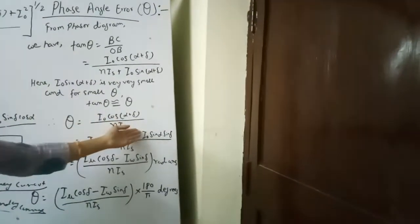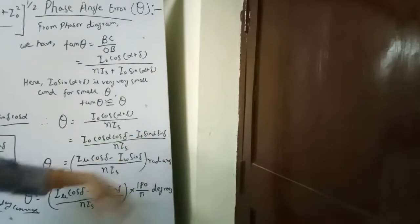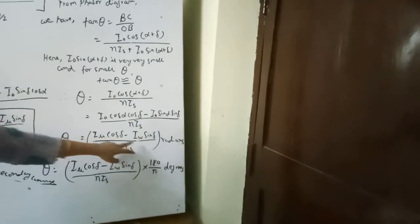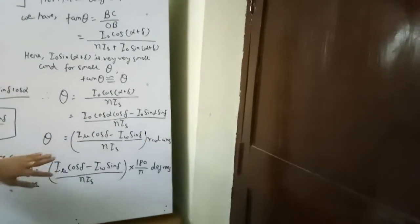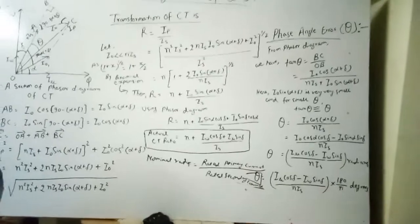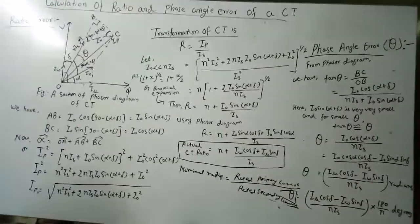Expanding cos(α + δ) = cos α cos δ − sin α sin δ, and substituting I₀ cos α = Iμ and I₀ sin α = Iw, we get the final expression for the phase angle error θ upon N·IS. This value can be expressed in radians or converted to degrees. In the next lecture, we will study the potential transformer and solve numerical problems. Thank you.